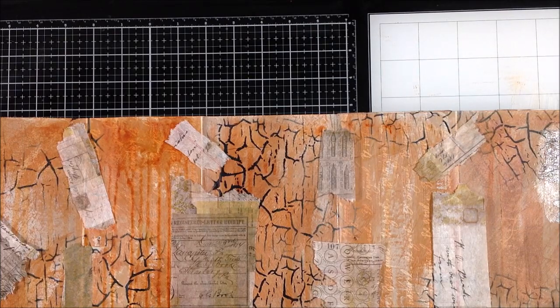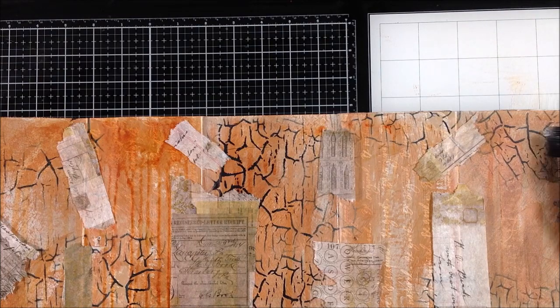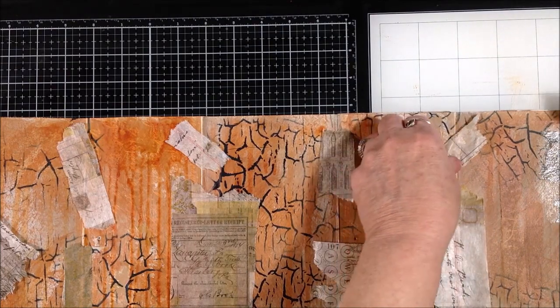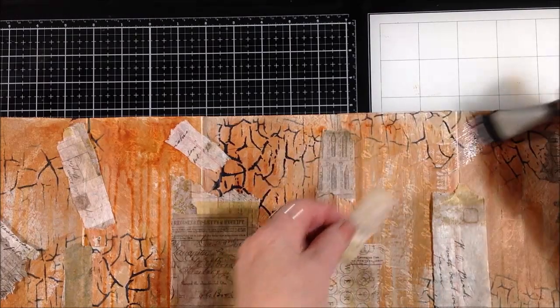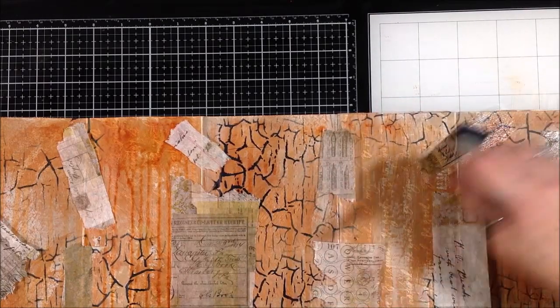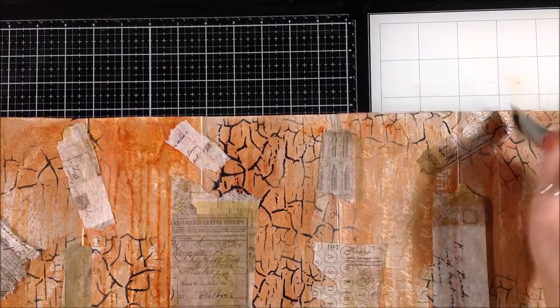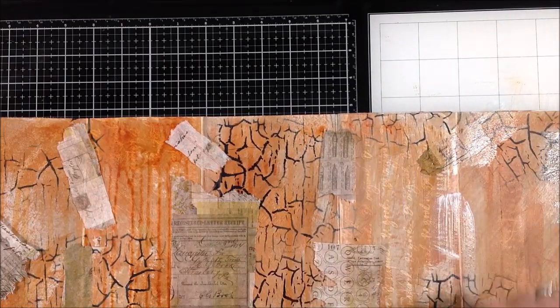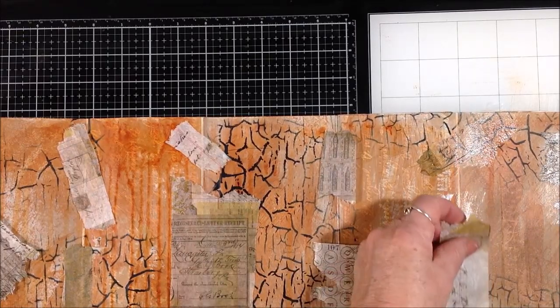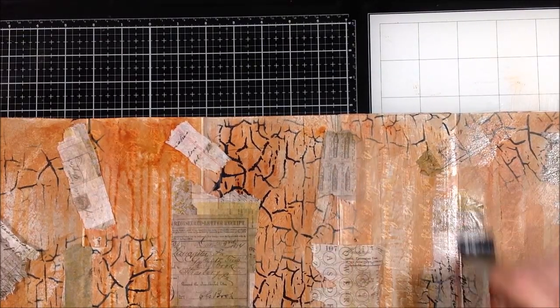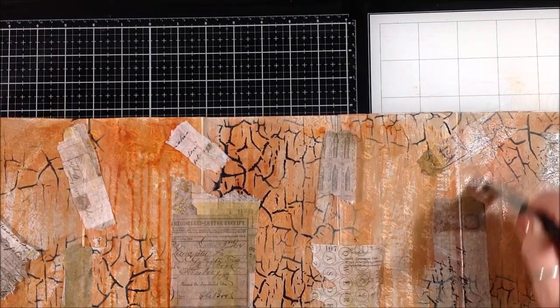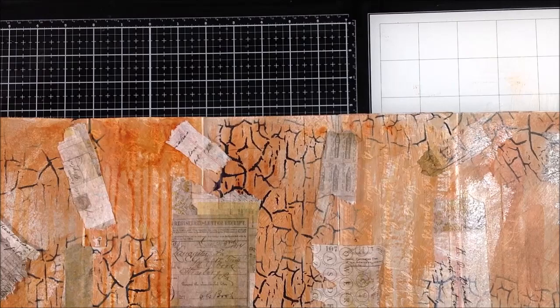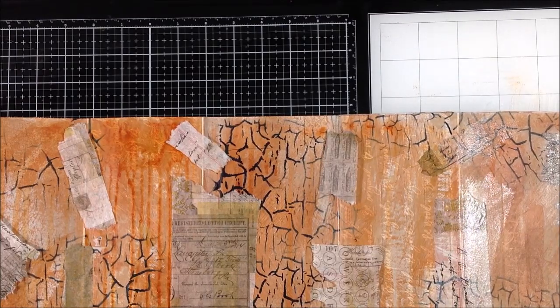For my next layer I am just going to randomly put down some pieces of this Tim Holtz Typography collage paper. I want to get another layer down but I also want to cover some of the fold areas to try to camouflage them a bit and I think the tissue paper is thin enough that it will still allow the paper to fold correctly. I hope we are going to find out.